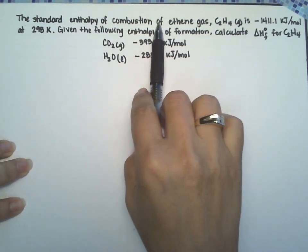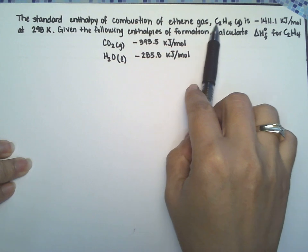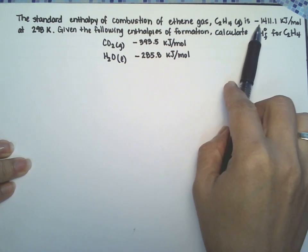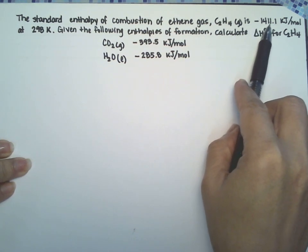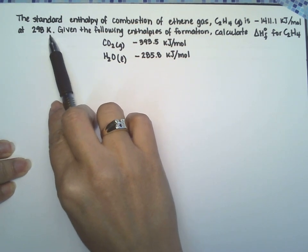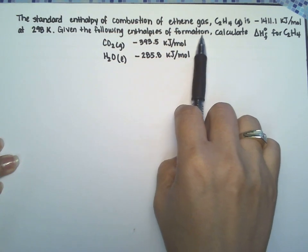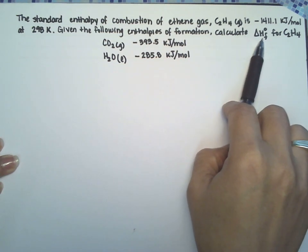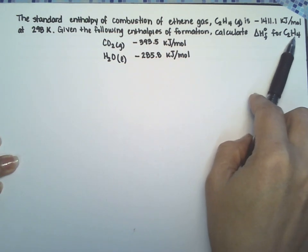The standard enthalpy of combustion of ethene gas is minus 1411.1 kilojoules per mole at 298 Kelvin. Given the following enthalpies of formation, calculate the enthalpy of formation for ethene.